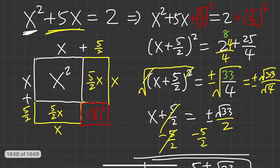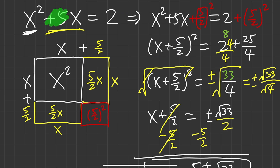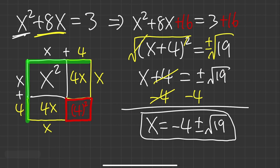As you can see, if the coefficient of x is an odd number, we end up dealing with fractions. Sometimes it's not so bad. But if the coefficient of x is an even number, the process is much cleaner because everything stays as whole numbers.